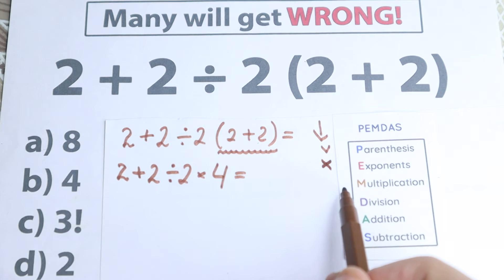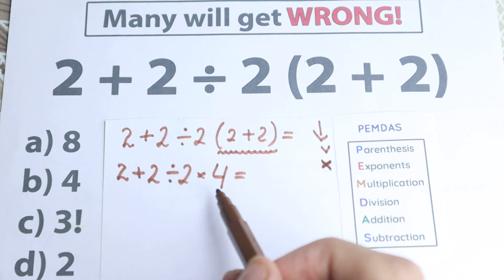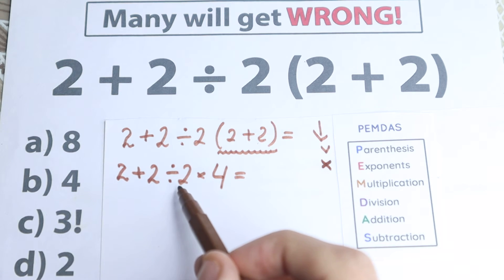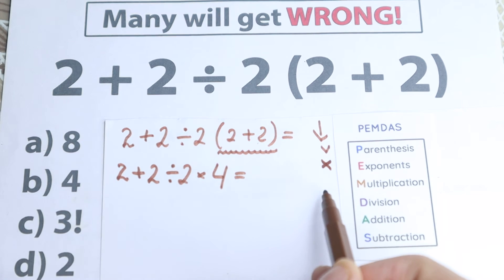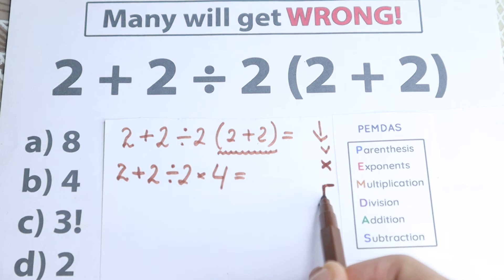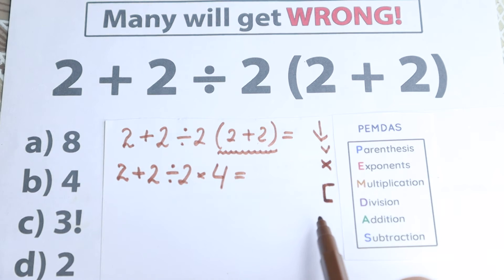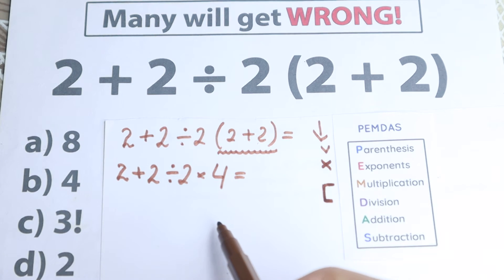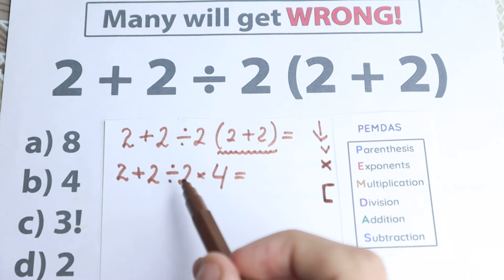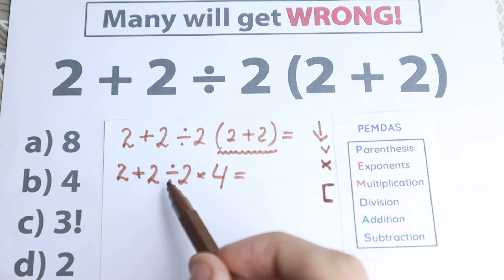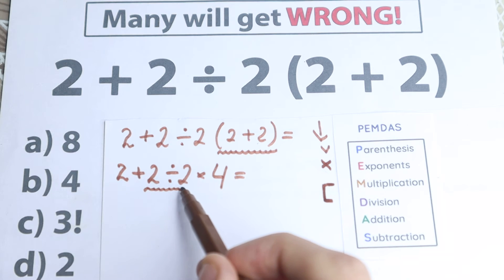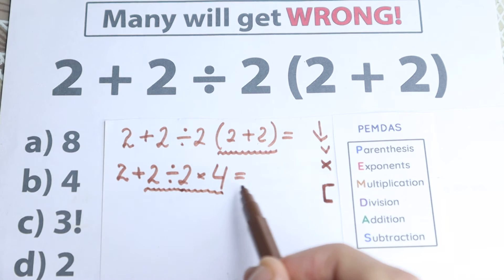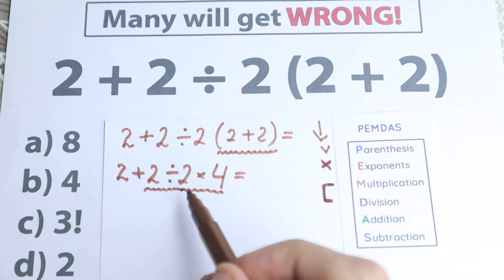The next step according to PEMDAS is multiplication. We have a multiplication sign, and a lot of students make the common mistake of jumping straight to it. But according to PEMDAS we need to treat multiplication and division as one common group. We scan for those signs: we have addition — that doesn't count — but we have division and we have multiplication. So our next step is to solve this expression. Let's do this.